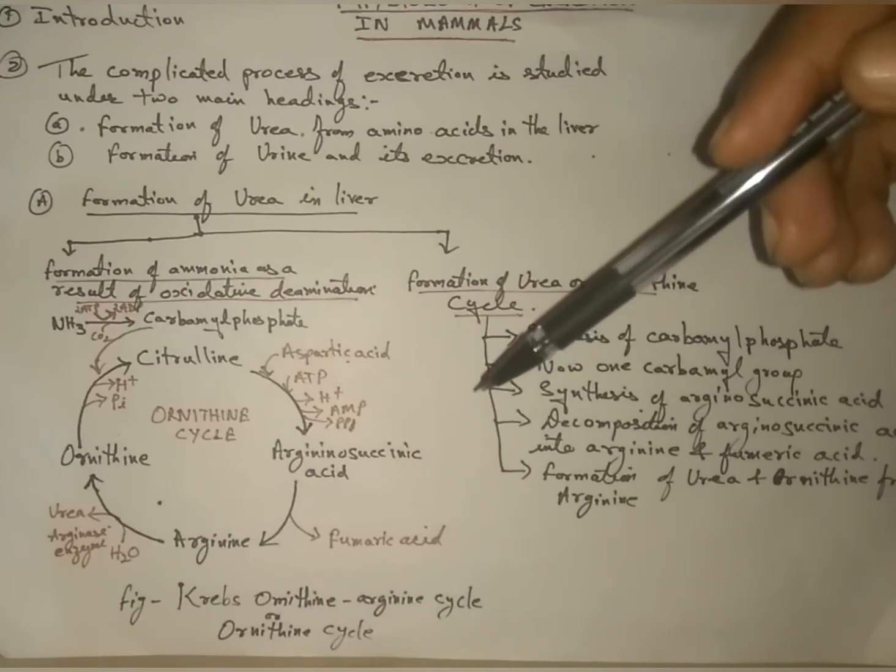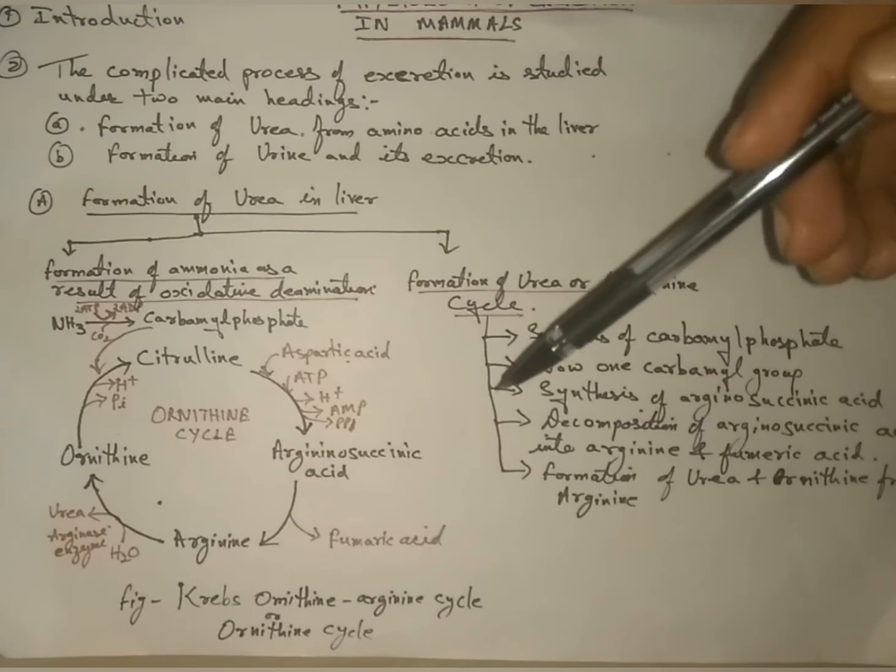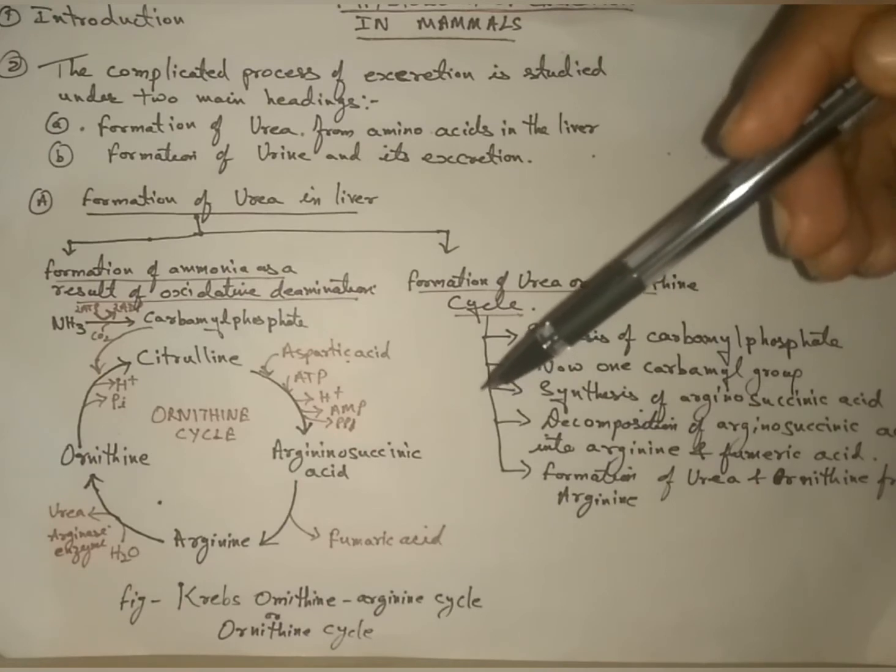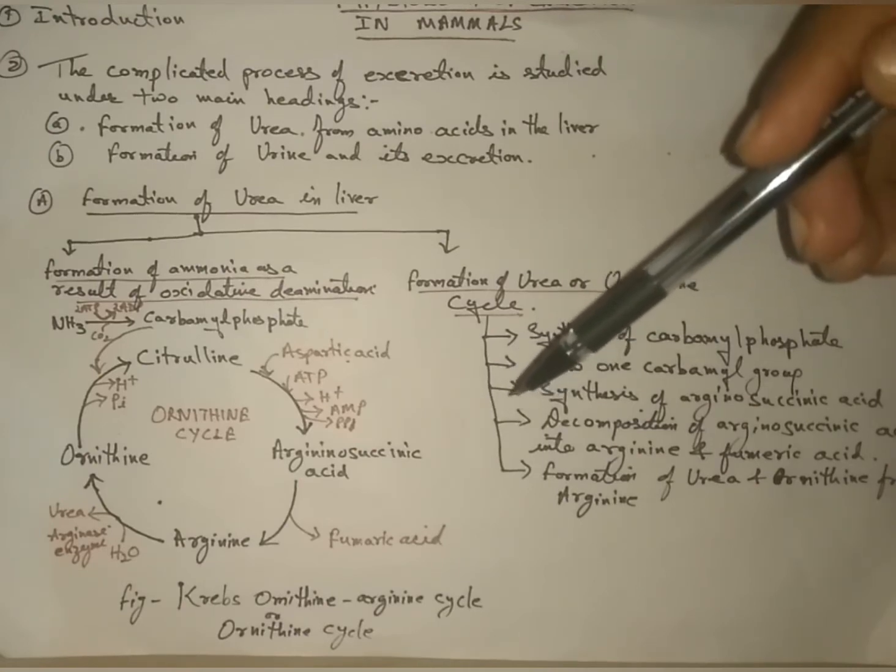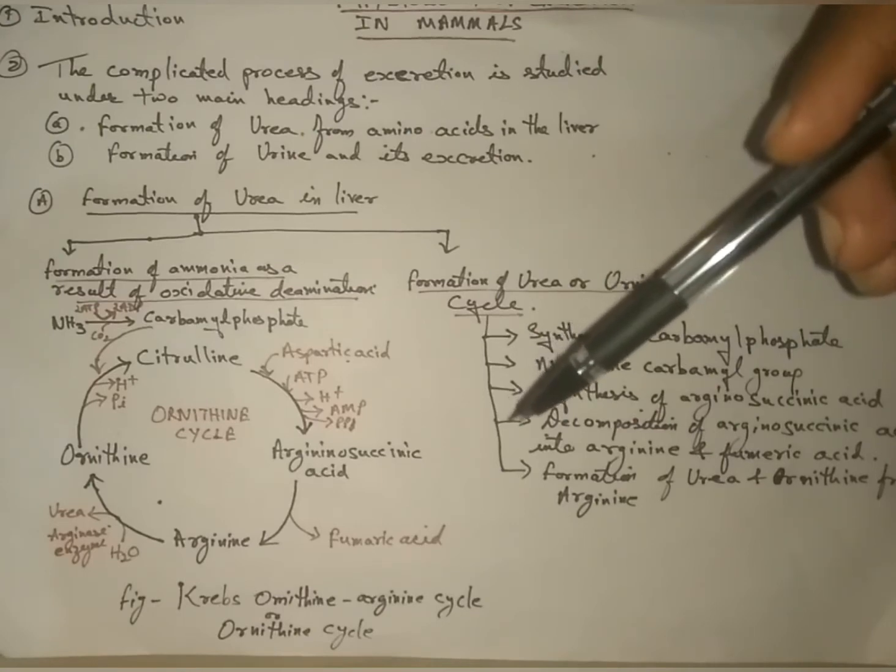In this process, first of all, two molecules of alanine unite with one molecule of oxygen in the liver cells and produce two molecules of ammonia and two molecules of pyruvic acid. In the second stage, pyruvic acid is oxidized to form carbon dioxide, water, and energy. These reactions can be expressed as follows.